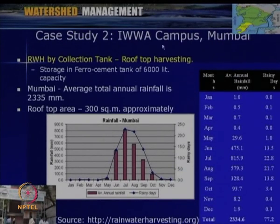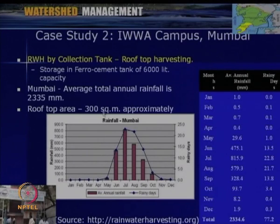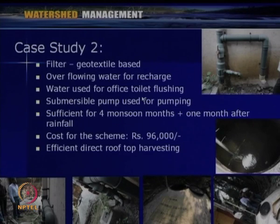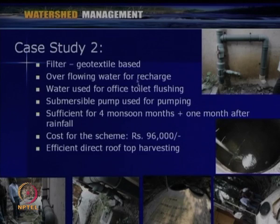Case Study 2: Collection-type system at Indian Water Works Association campus, Mumbai. Storage is done in a ferro cement tank of about 6,000 liters. Mumbai average rainfall is 2,335 mm; rooftop area is about 300 square meters. A geotextile-based filter system is used; overflow water goes for recharge. The collected water is used for toilet flushing and was found sufficient for monsoon months plus one additional month after rainfall. Total cost was about 96,000 rupees.